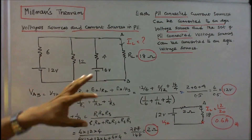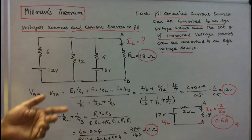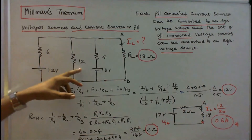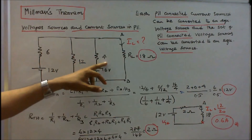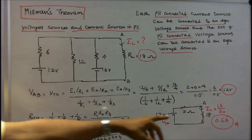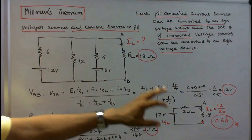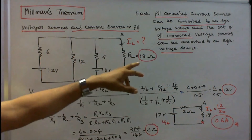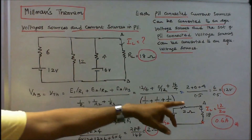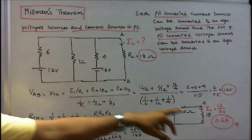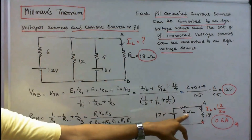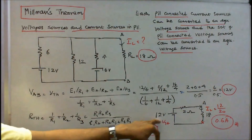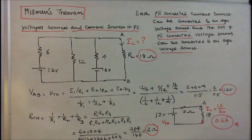Next, the Thevenin resistance: 1/R equals 1/6 plus 1/12 plus 1/4, giving R_th equals 2 Ohms. Therefore, the current flow through the 18 Ohm resistance is 12/(18 + 2) = 12/20 = 0.6 Amps.